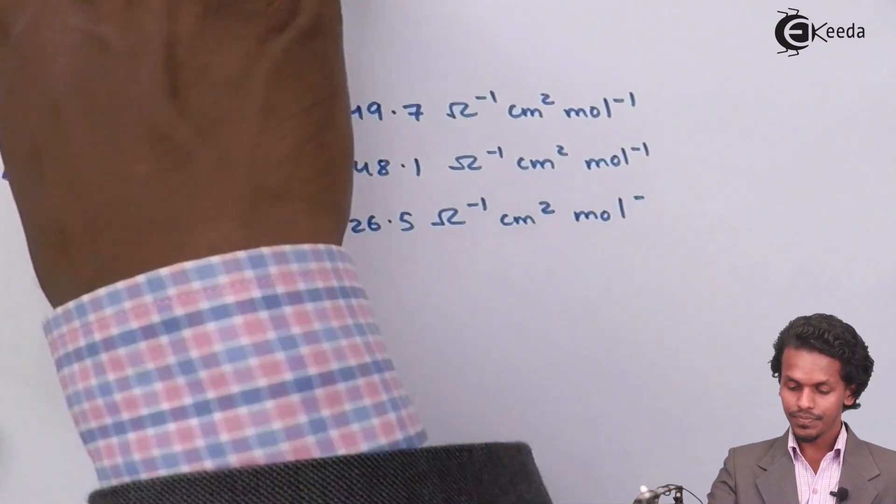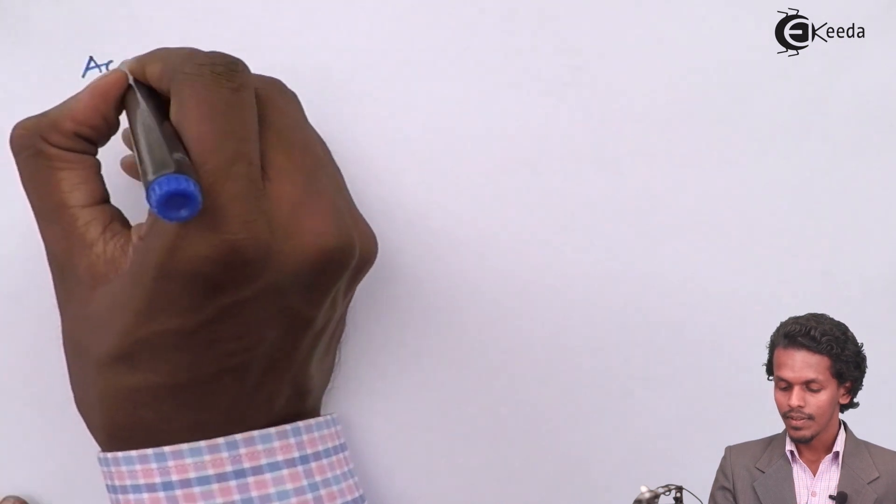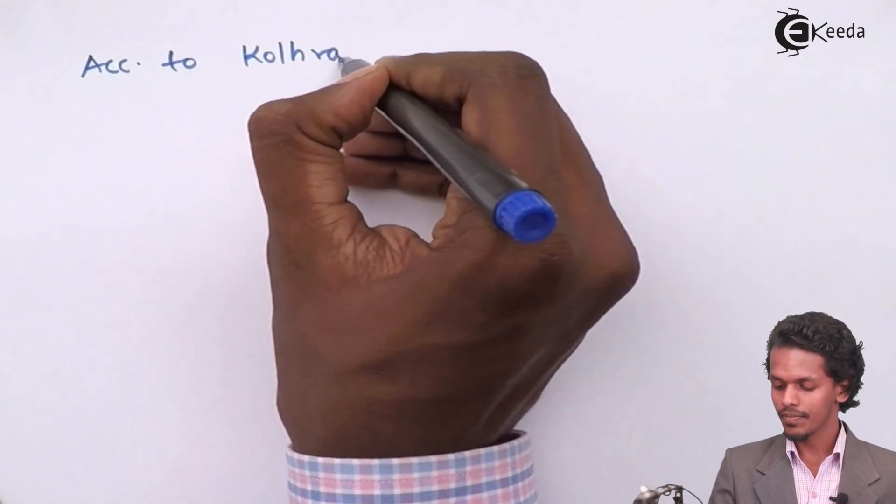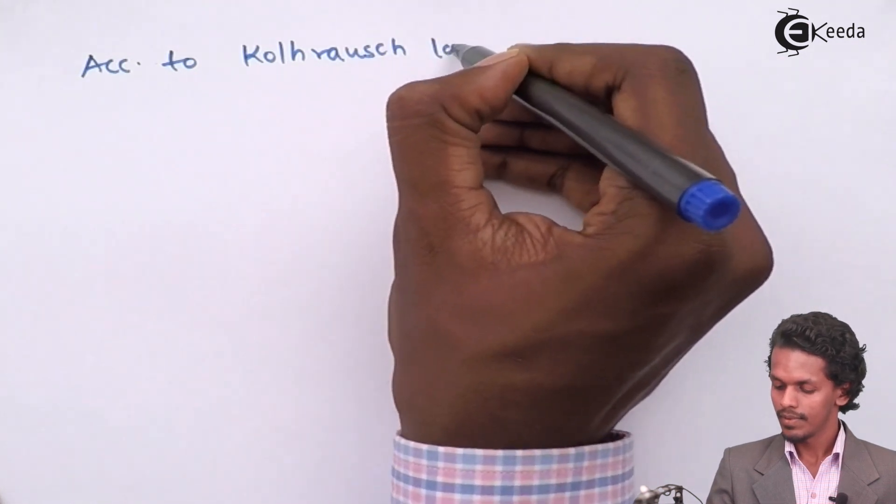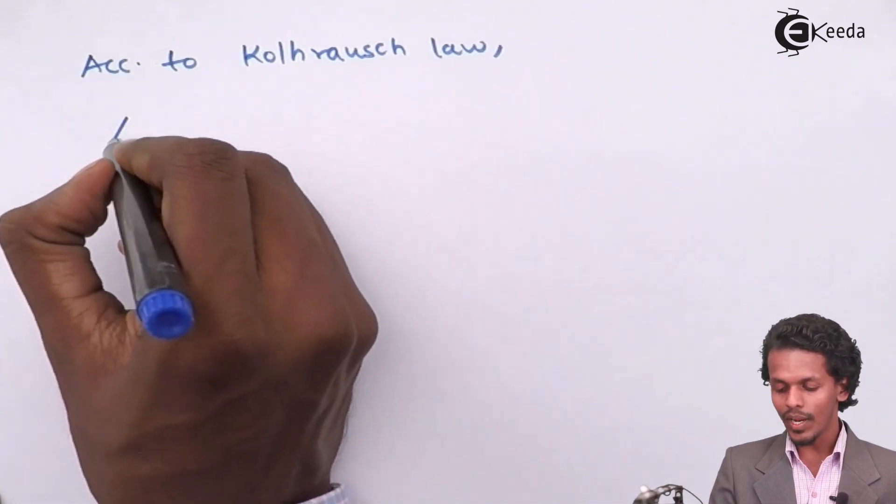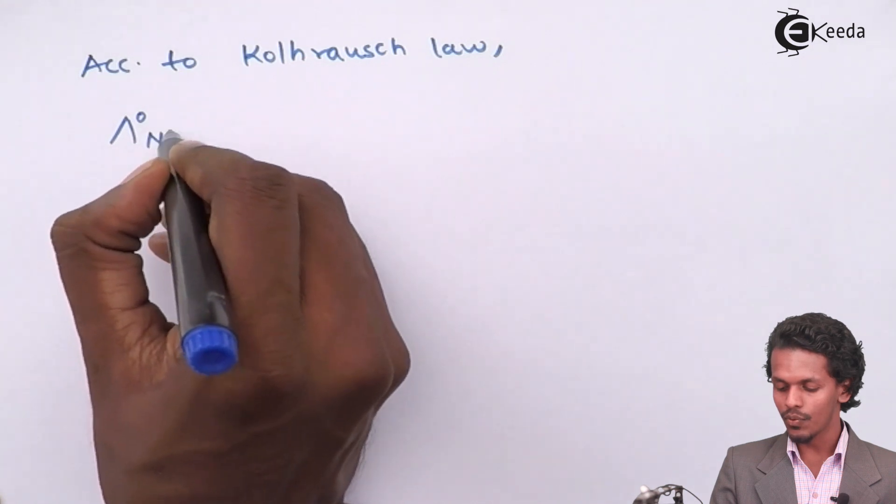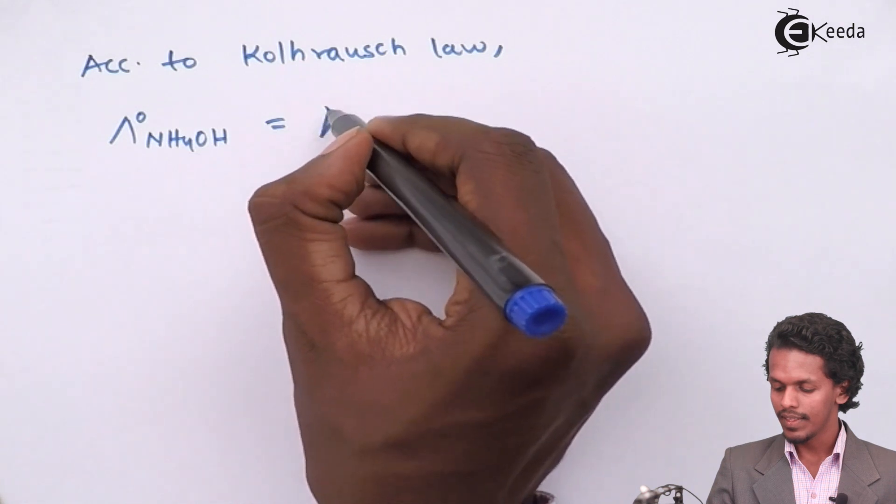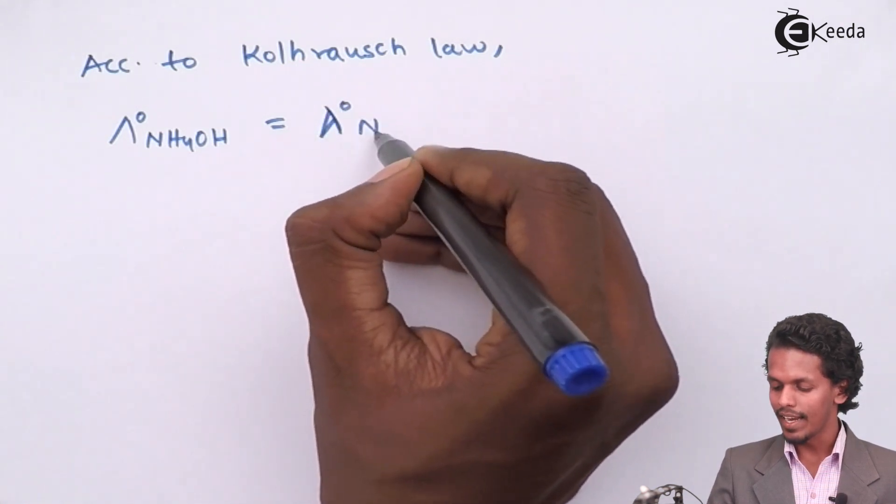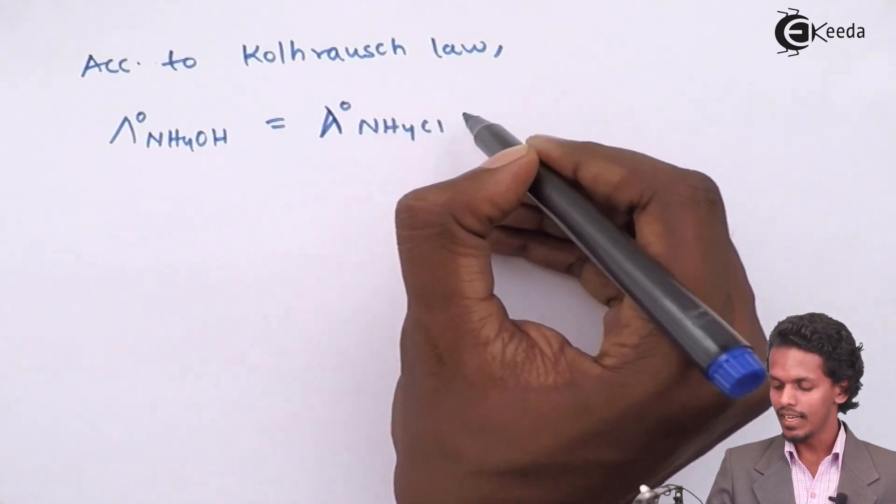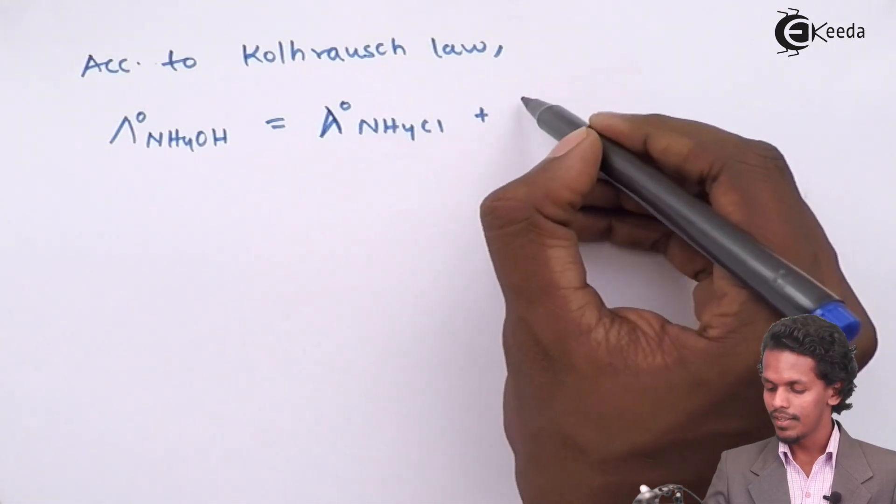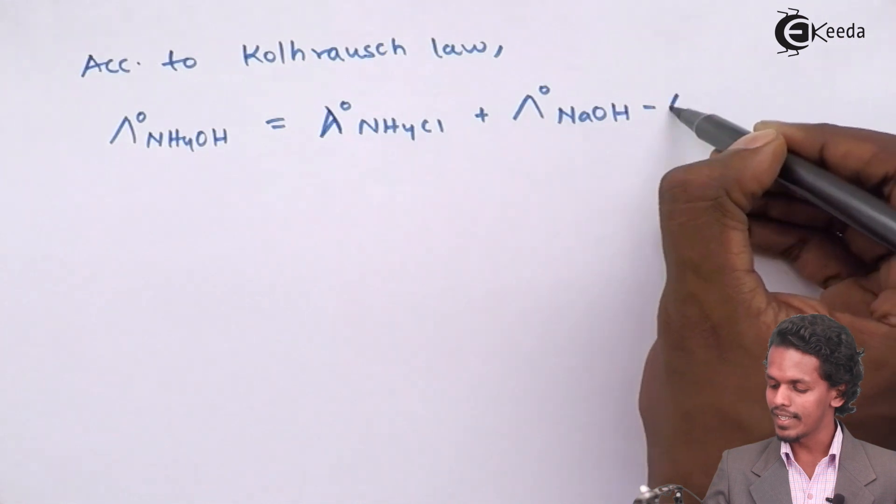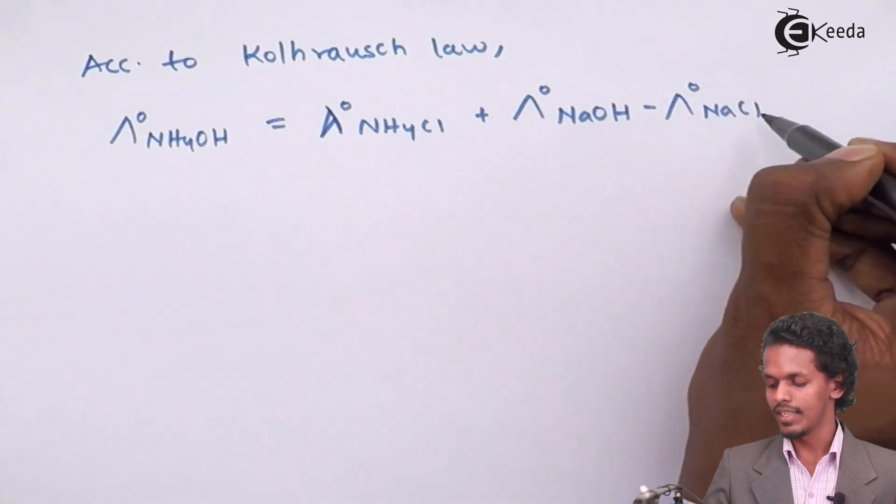So what we are going to do is, according to Kohlrausch law, if we have to calculate lambda naught for NH4OH, we have to add lambda naught for NH4Cl plus lambda naught for NaOH and subtract lambda naught for NaCl.